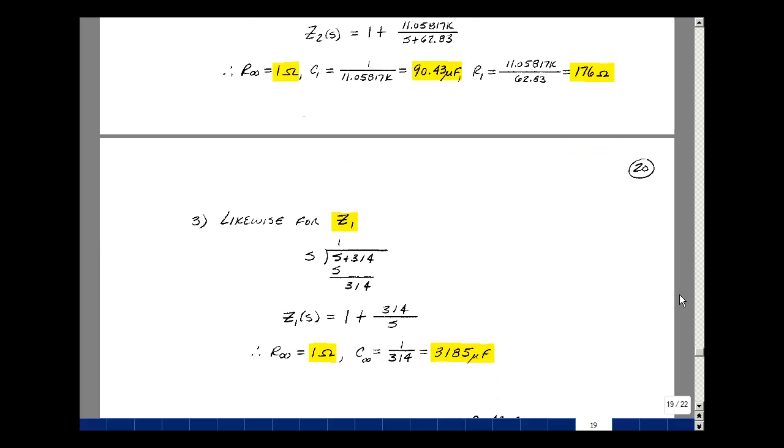We likewise need to do this for Z1. Dividing the denominator into the numerator, this would go once, and the remainder would be 314. You could write Z1 as 1 plus 314 over S. This would be our R infinity of 1 ohm, and then 314 divided by S is just the impedance of a capacitor whose value is 1 over 314, which is 3,185 microfarads.